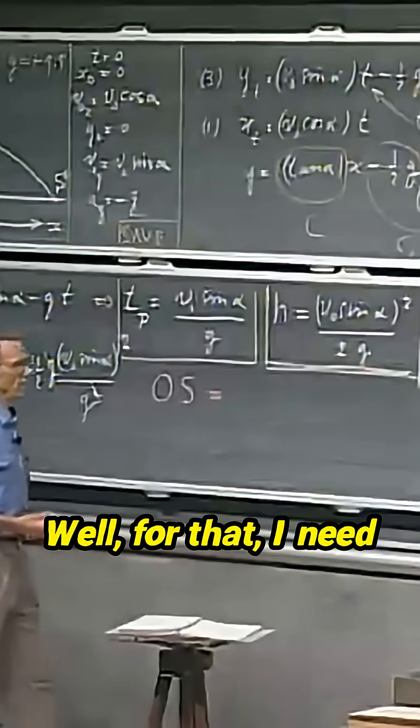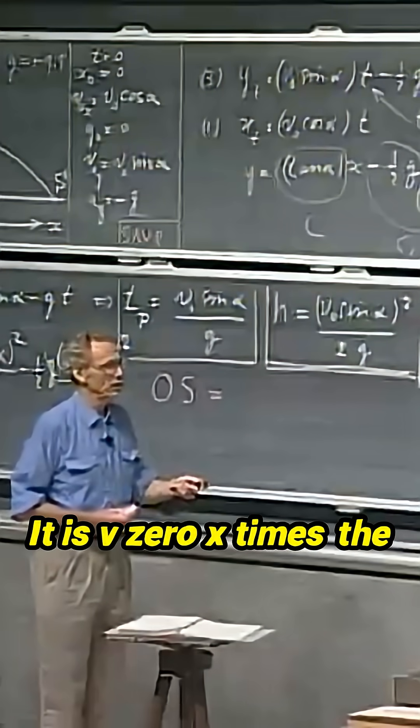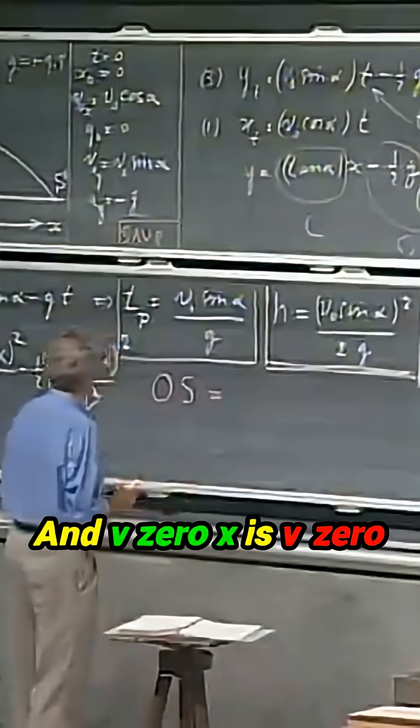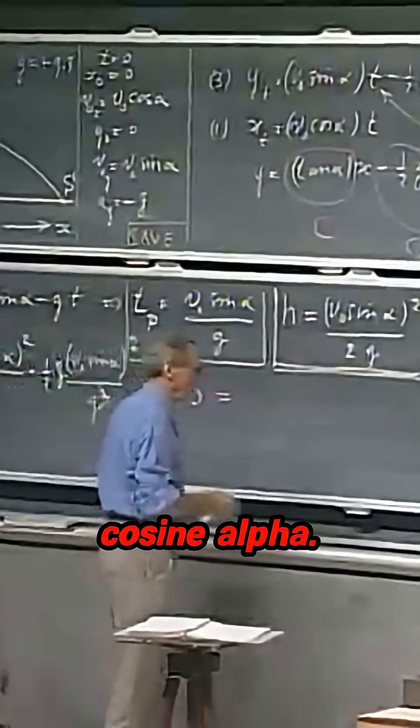Well, for that, I need equation number one. It is v zero x times the time. And v zero x is v zero cosine alpha.